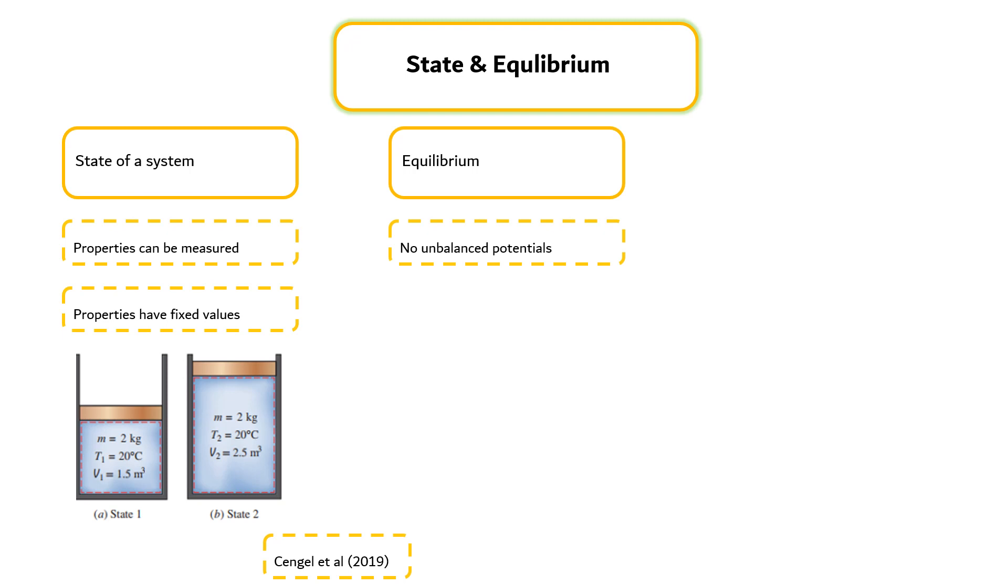There are many types of equilibrium, and a system is not in thermodynamic equilibrium unless the conditions of all the relevant types of equilibrium are satisfied.